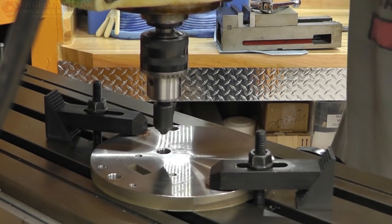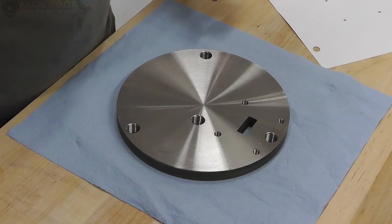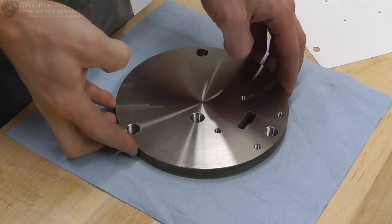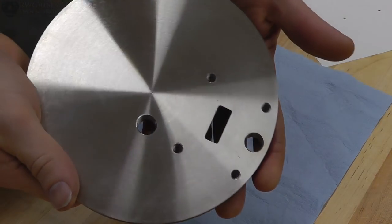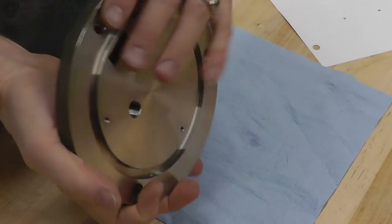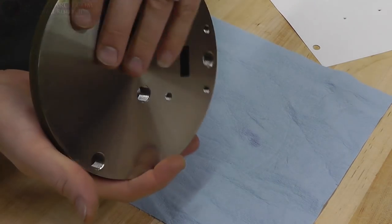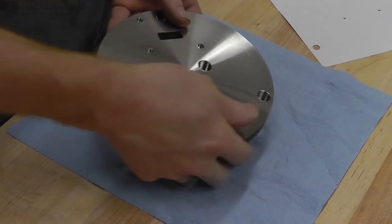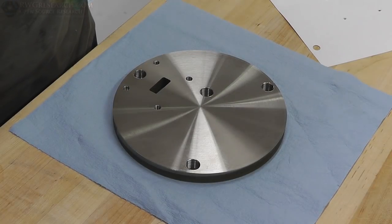Alright, so there we go. We have managed to put the only inlet and exit threaded hole in this plate that we need. Now it's a finished plate. We got to clean all these parts before we can put them together.